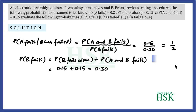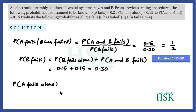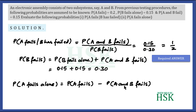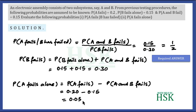For part two, the probability that A fails alone equals P(A fails) minus P(A and B both fail), which is 0.20 minus 0.15, equal to 0.05. This is the required answer. That is how we solve this question.